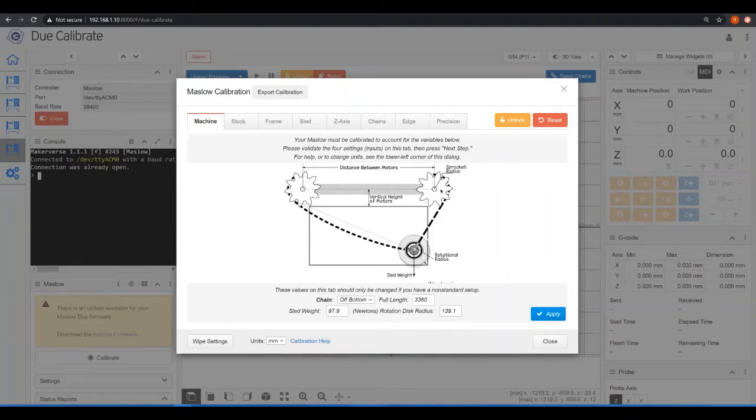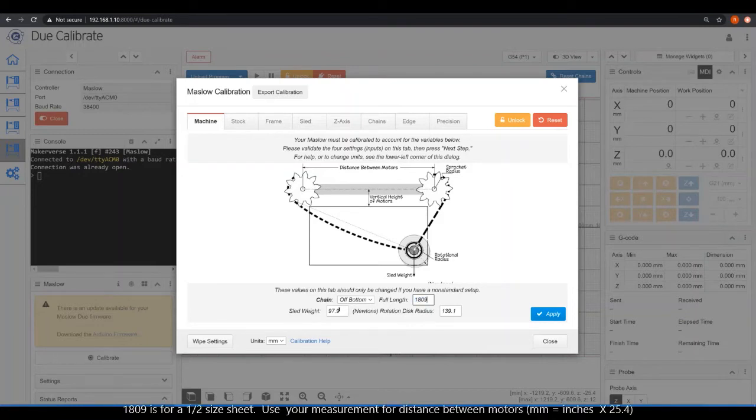So look at your frame. How did you set up your chains? Typically you can go under this bracket or over this bracket with your chain. This one goes under and then has a weight on it. So mine are off the bottom. The full length of the beam is 1809. The sled weight is 139, actually 137.9. Actually 139.1 is the default. We'll go with that because that's the ring.